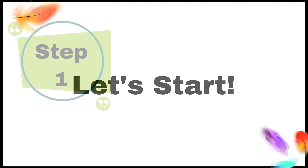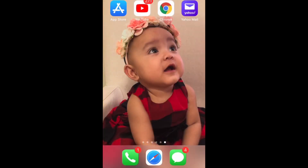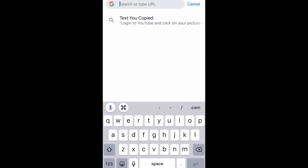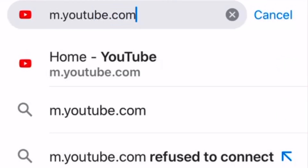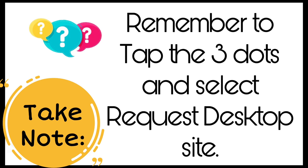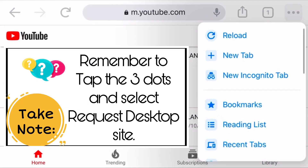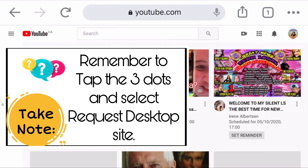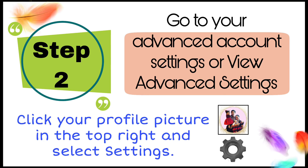Let's start. Step 1: Go to google.com and sign in to YouTube. Remember to tap the three dots and select "Request desktop site." Step 2: Go to your advanced account settings, or view advanced settings, by clicking your profile picture. Click on the icon in the top right and select Settings.